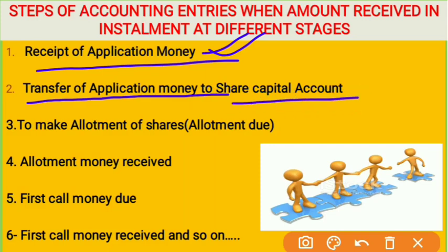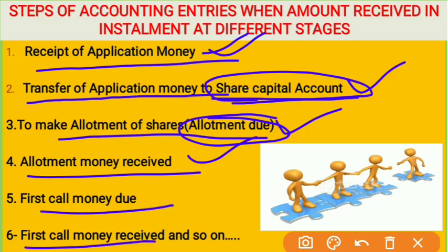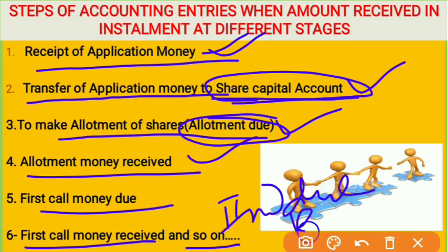After receiving application money, it is transferred to the share capital account. If there is any return, it is recorded in a compound entry. After transfer, the company makes allotment — first allotment is due, then allotment money is received. After allotment, the remaining amount is the call money, which can be demanded in one or two calls. For first call: it is first due, then received. Similarly for second or final call: due first, then received.